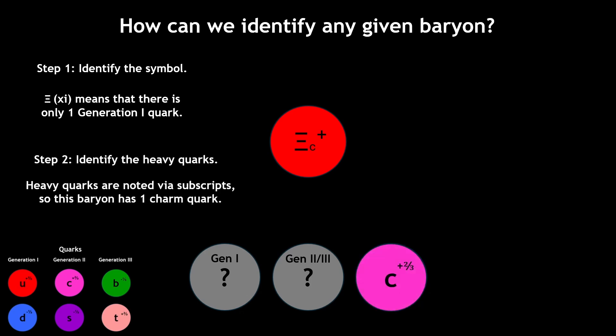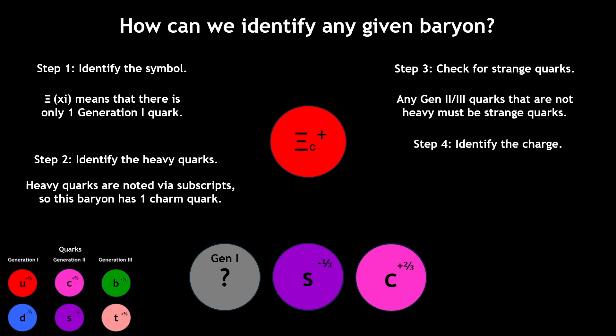Next, we can check for strange quarks, since any generation 2 or generation 3 quarks that are not heavy must be strange. Lastly, we can use the baryon's charge to deduce if the generation 1 quarks are up or down.